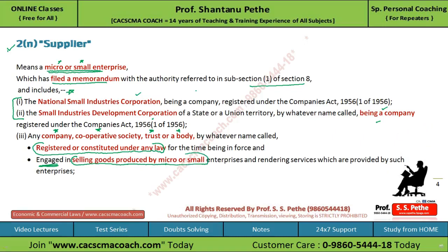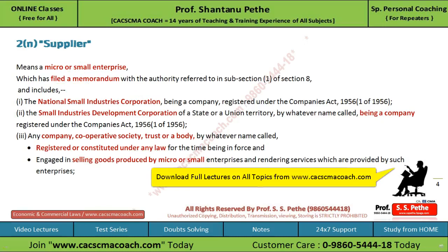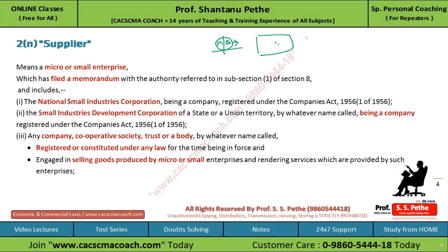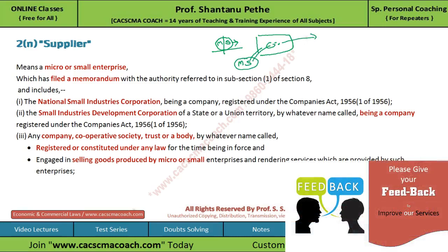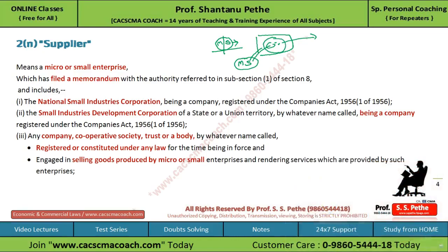तो इस definition को ध्यान से देखें तो supplier की category में micro और small enterprise आ रहे हैं जो file करते हैं memorandum under Section 8(1). और साथ में ऐसी companies, cooperative society, trust या body आ जाती हैं जो micro या small enterprise के products या services लेकर market में sell करती हैं — तो इन companies, cooperative society, trust और body को भी supplier माना गया है.